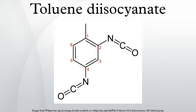Applications: The isocyanate functional groups in TDI react with hydroxyl groups to form carbamate links. The two isocyanate groups in TDI react at different rates; the 4-position is approximately 4 times more reactive than the 2-position. 2,6-TDI is a symmetrical molecule and thus has two isocyanate groups of similar reactivity, similar to the 2-position on 2,4-TDI. However, since both isocyanate groups are attached to the same aromatic ring, reaction of one isocyanate group will cause a change in the reactivity of the second.